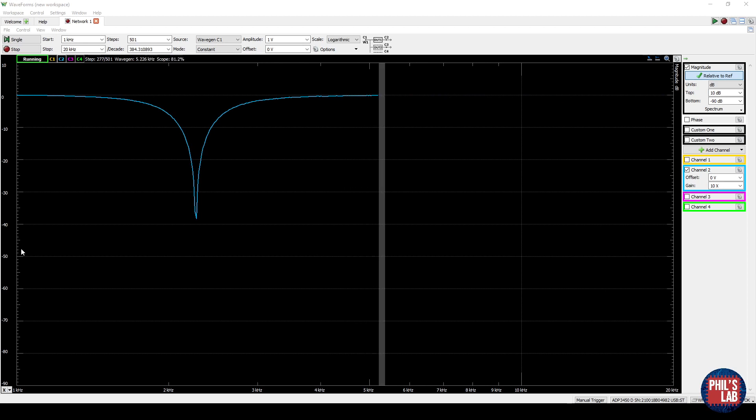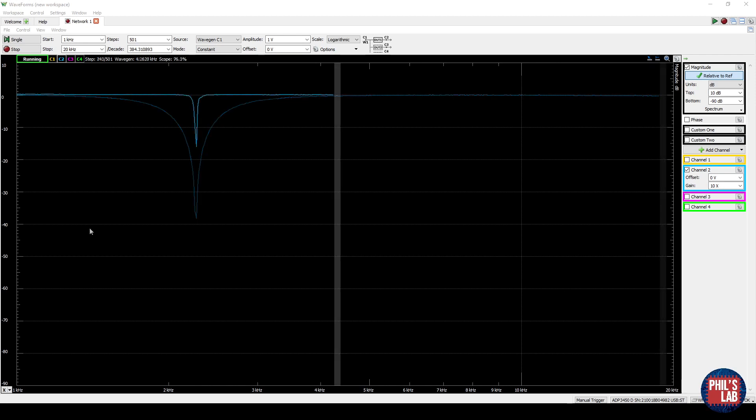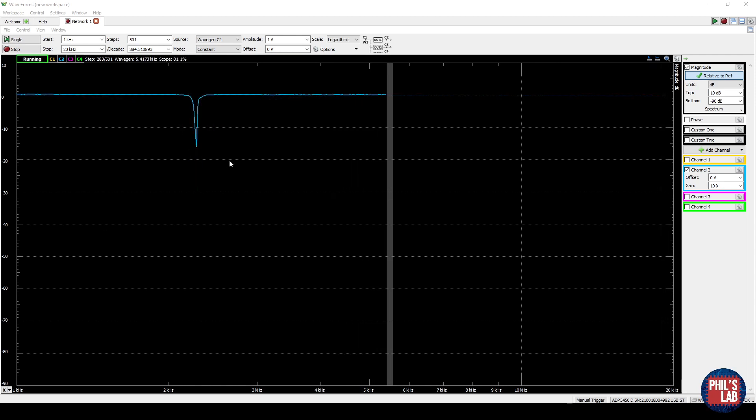So by rotating my potentiometer all the way clockwise, this is the one for the notch width, you can see I have a much wider notch over here. Now similarly I can turn it completely counterclockwise and we can see the results. So with the potentiometer completely counterclockwise, that is the one for the notch width, you can see we have a much smaller notch but also far less attenuation with about minus 15 or 16 decibels instead.